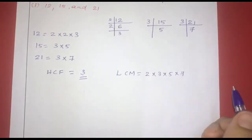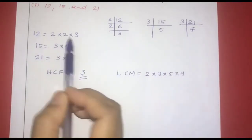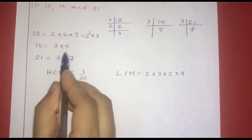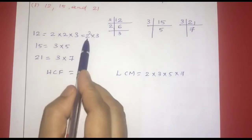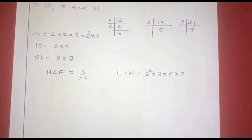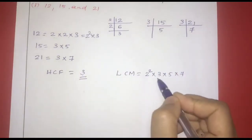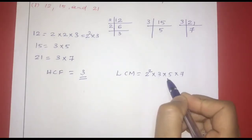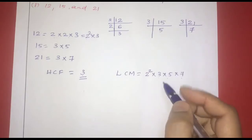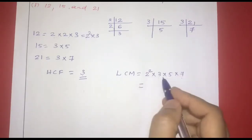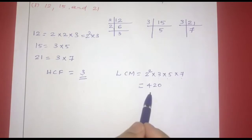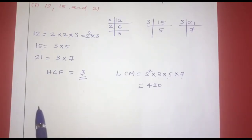We take the highest power of each prime. 2 appears twice in 12, so highest power is 2². 3 appears to the power 1, 5 to the power 1, and 7 to the power 1. Therefore, LCM = 2² × 3 × 5 × 7 = 420. So LCM is 420 and HCF is 3.